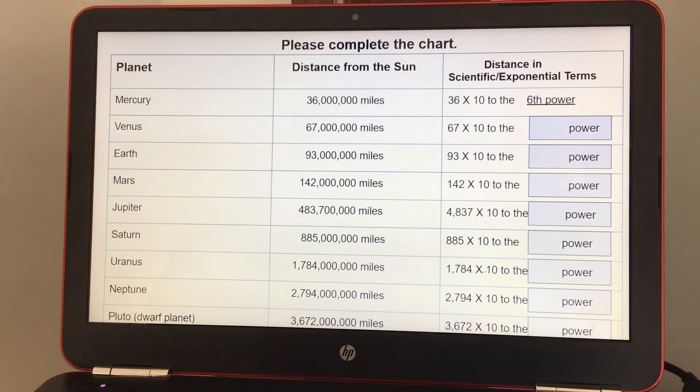So Venus is 67 million miles away from the Sun and we're writing it as 67 times 10 to the sixth power.